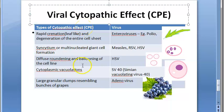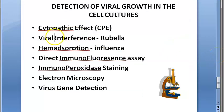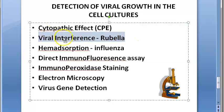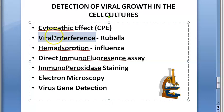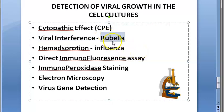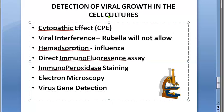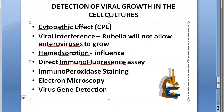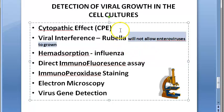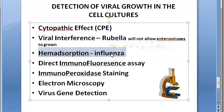If a virus is not cytopathic, we use viral interference. Viral interference means one virus will not allow another type of virus to grow. For example, rubella is a non-cytopathic virus — it will not allow enteroviruses like poliovirus to replicate. By observing that enteroviruses are not growing, you can detect the presence of rubella virus. Then there is heme adsorption, where influenza is a good example.